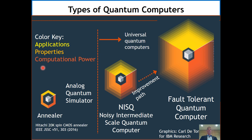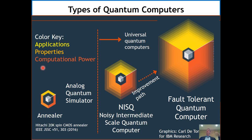Here are the types of quantum computers. Starting in the lower left, there's the annealer. You've heard about annealers like D-Wave. Hitachi made a 20,000-spin annealer in CMOS. These look for the lowest energy state and solve simulated annealing problems more quickly. Next is an analog quantum simulator, which mimics an atom or quantum system with other quantum systems — everything hardwired to solve a specific problem.